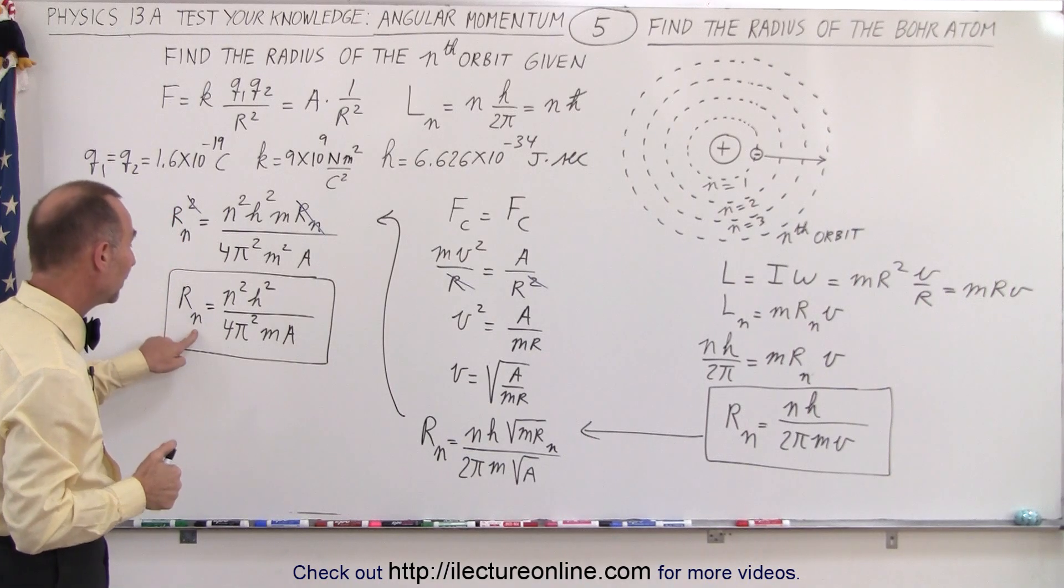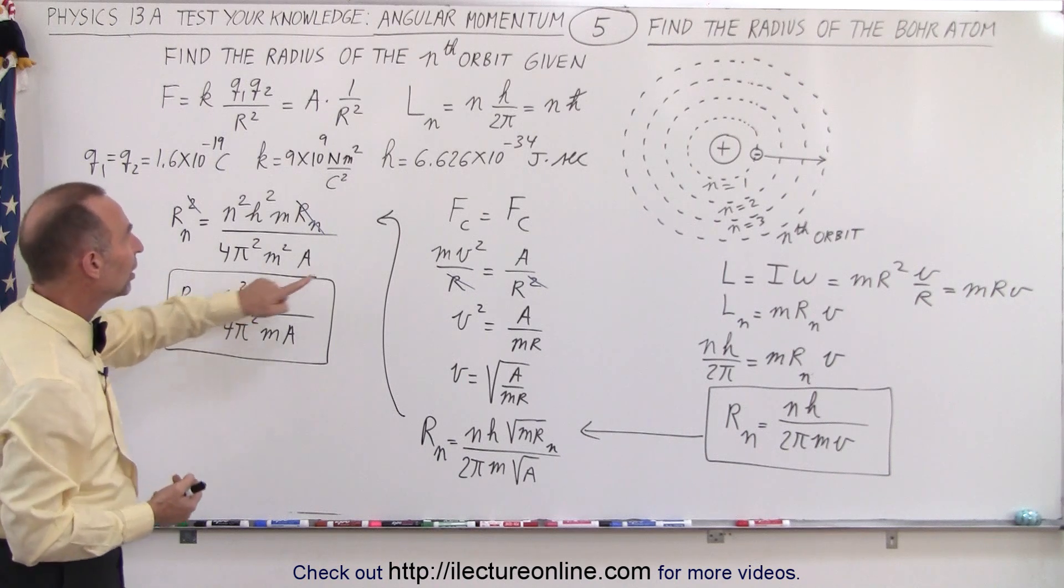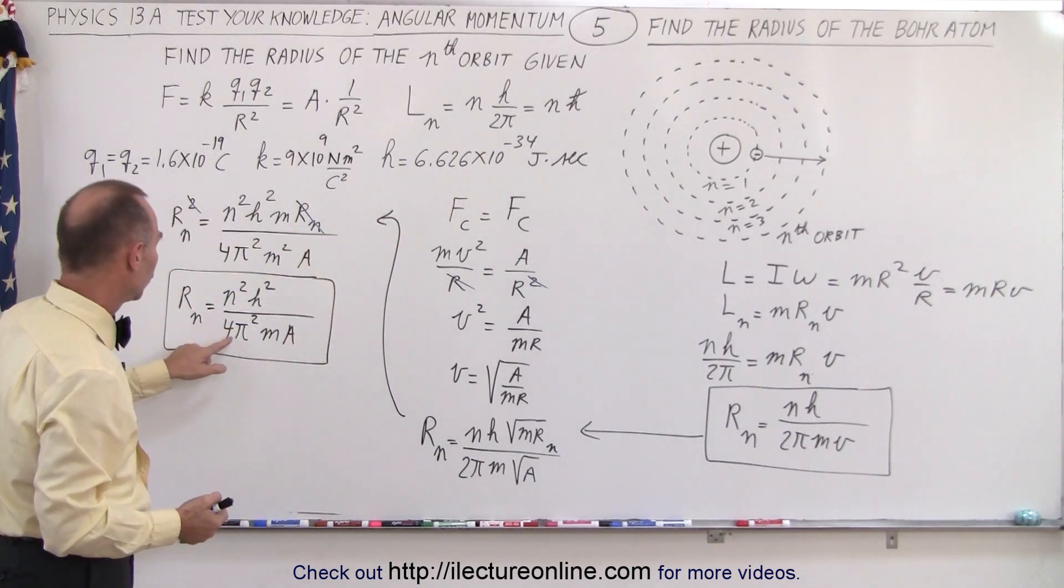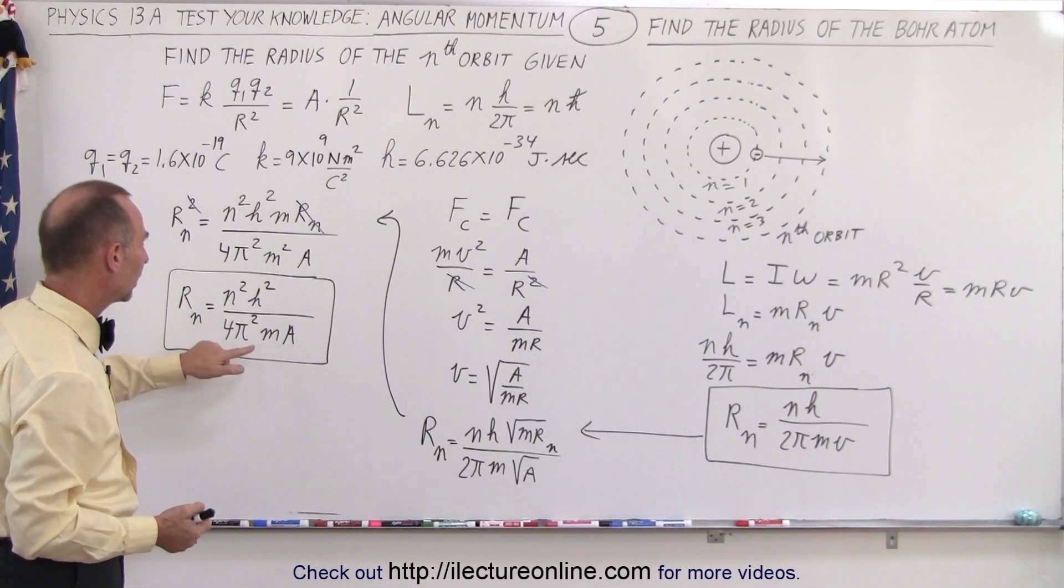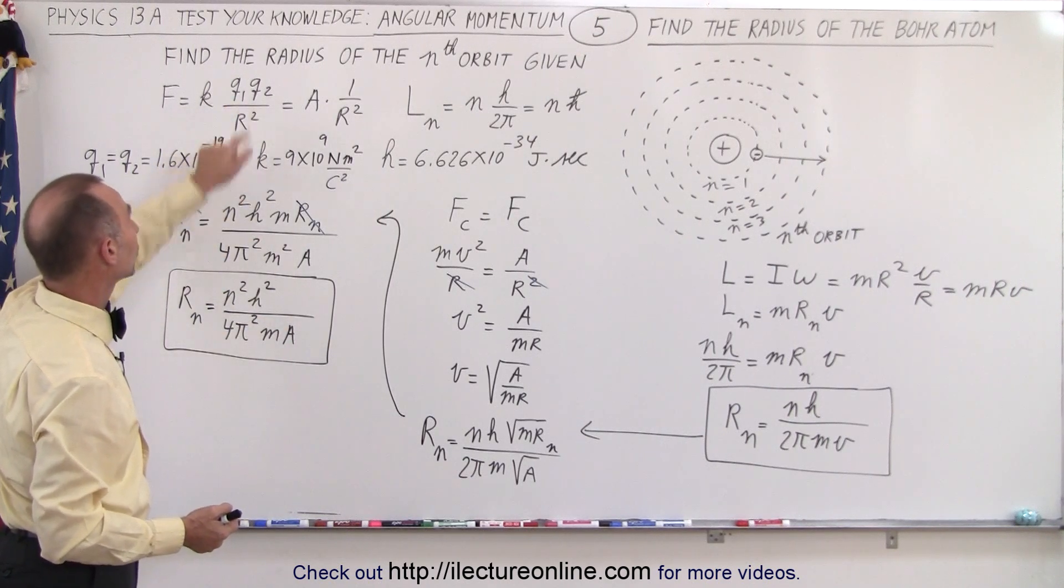Notice that the radius for any orbit n - n squared, n is an integer, h is Planck's constant, 2π squared becomes 4π squared, m is the mass of the electron, and a would be k, q1, q2. All those things were known.